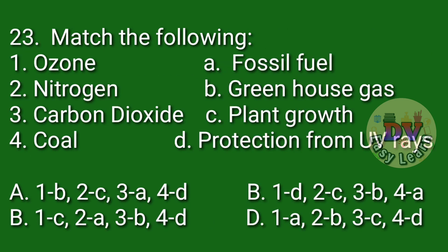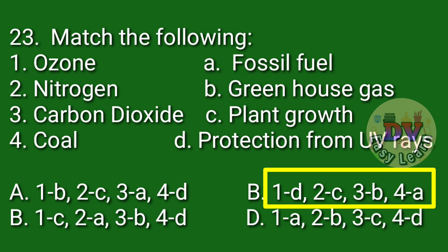Question number 23. Match the following. Correct answer: 1-D, 2-C, 3-B, 4-A. Ozone: protection from UV rays; Nitrogen: plant growth; Carbon dioxide: greenhouse gas; Coal: fossil fuel.